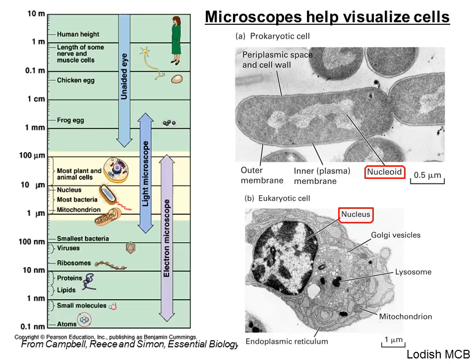If we want to see a eukaryotic cell like an amoeba, we can use a light microscope to see it. But that will not help us discern the organelles present inside that amoeba cell. Neither would we be able to see bacteria — they are too small for our eyes. We can use different light microscopes to appreciate those cells.